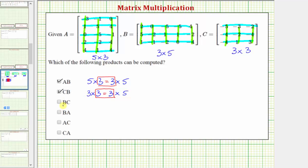Next we have matrix B times matrix C. Matrix B is a three by five matrix and matrix C is a three by three matrix. The number of columns in the first matrix does not equal the number of rows in the second matrix, which means we cannot compute this product.